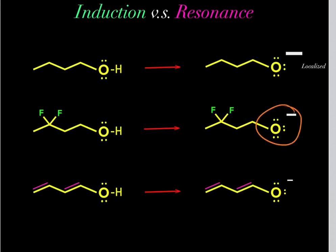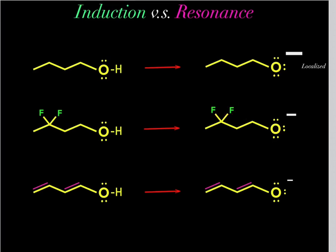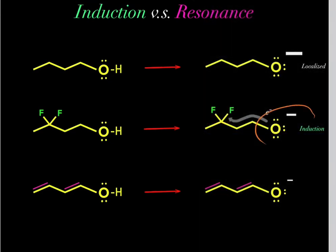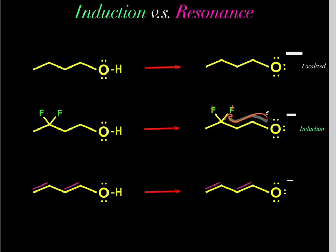What about this oxygen? It also has a formal charge of negative one — the charge of one negatively charged electron. However, something important to realize is we have these fluorine atoms, and fluorine is the single most electronegative atom in the periodic table. The more electronegative an atom, the more positive Zeff nuclear charge it has in its nucleus, so fluorine attracts negative charge density toward itself.